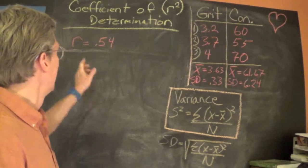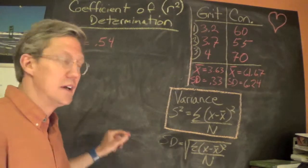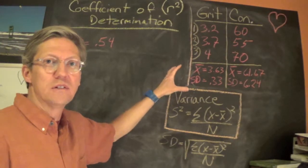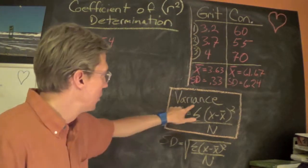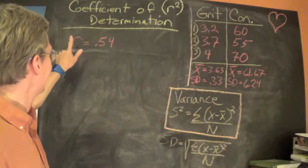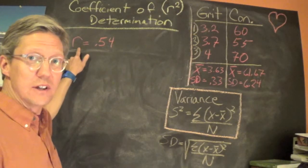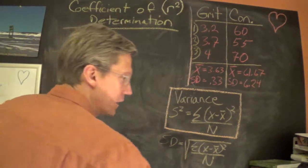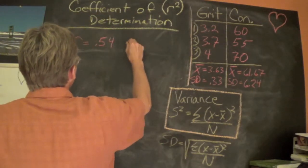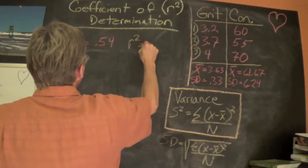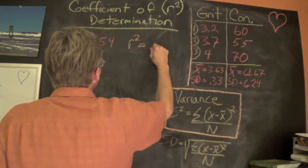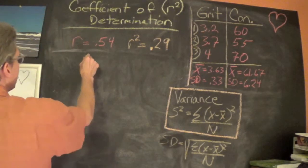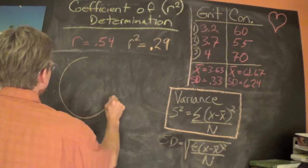The coefficient of determination brings us back to being able to talk about the proportion of variance. What we're going to do is take r, the correlation coefficient, and square it so that we can move back to talking about proportion of variance. When we square r, we get our coefficient of determination: 0.29.